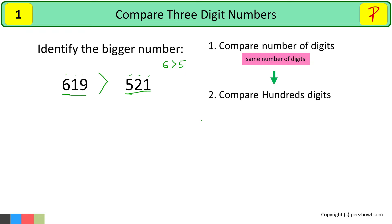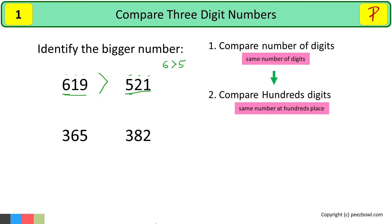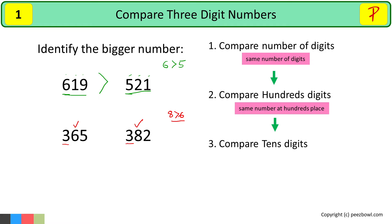Now, what will happen if both the numbers have the same digits at the hundreds place? Let us take one more example. Let us compare 365 and 382. Here, both these numbers have 3 at the hundreds place, so we cannot decide which number is bigger. In this case, we will compare the tens digit in both the numbers. The number having greater tens place value will be the bigger number. In 365, we have 6 at the tens place and in 382, we have 8 at the tens place. As 8 is bigger than 6, so 382 will be bigger than 365. I will place an open crocodile face towards the bigger number, that is 382.